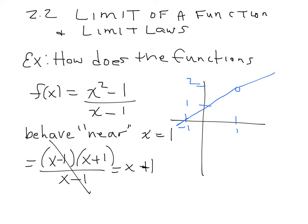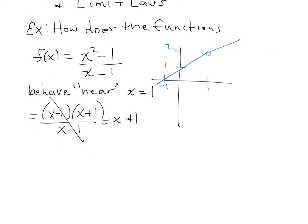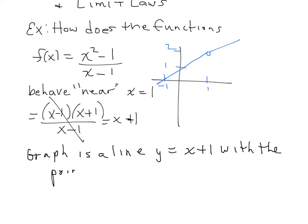If you remember from algebra or pre-calc when you do domains — you want so badly to say you could plug in 1 here, but you have to go back every single step. Can you plug 1 in here? No. That's why you see the hole right there. So this graph is the line y = x + 1 with the point (1, 2) removed. If I did plug in 1 on that very last step, the value would be 1 + 1 = 2. That's how I got the 2.